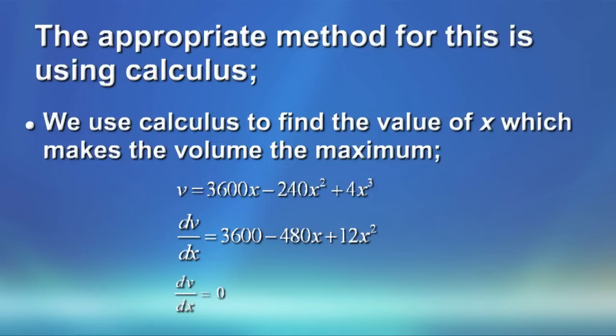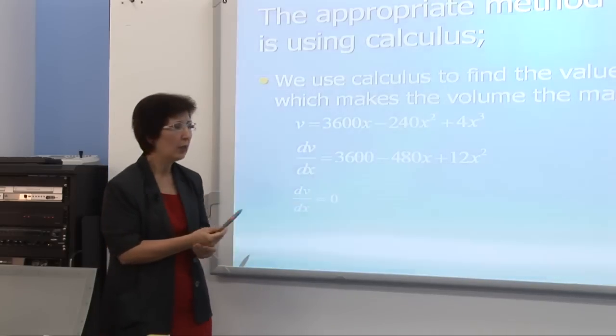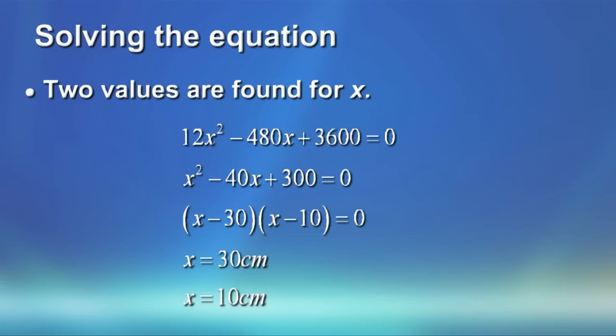In order to find the value of x which makes v maximum, we find the derivative of v, and we know the derivative is found by multiplying the power of x by the coefficient, reducing the power by 1. So it can easily be seen that the derivative is 3,600 minus 480x plus 12x squared. We put the derivative equal to zero, and that will give us an equation, which if we solve this equation, we will end up with two values.